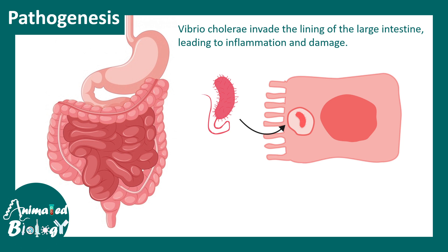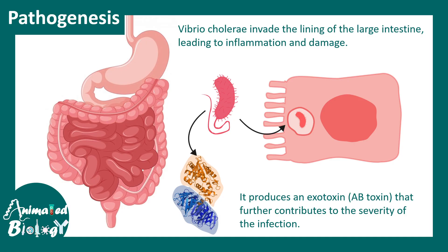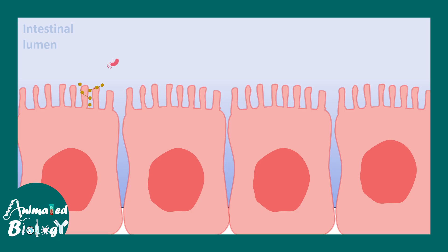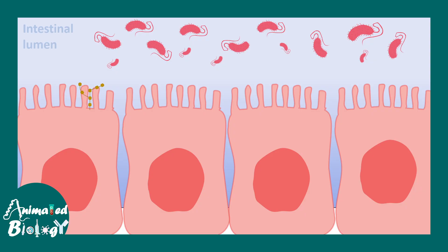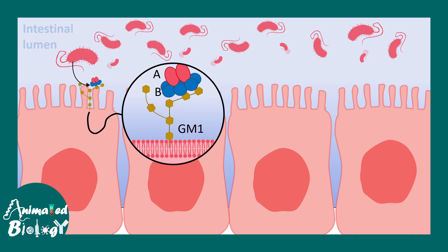Now let's talk about pathogenesis. Vibrio cholerae invades the lining of the small intestine and it has an AB toxin that does all the work. In the small intestine there are specific epithelial cells lining the intestinal lumen. The Vibrio cholerae which has entered the alimentary canal can secrete exotoxins, and these toxins bind to specific receptors on the epithelial cells — specifically the GM1 receptors present on these intestinal cells.